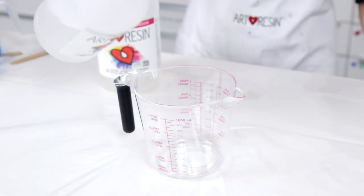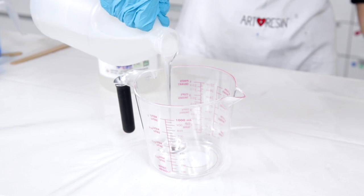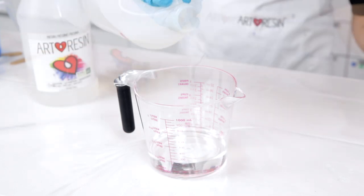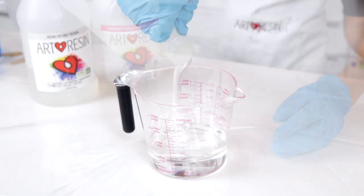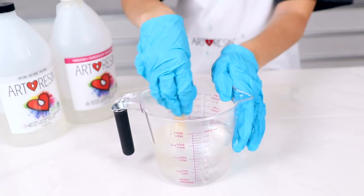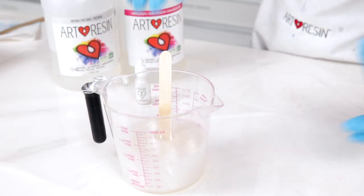Just like mold making material, art resin is a simple one-to-one ratio. Measure out equal parts of resin and hardener and mix thoroughly for three minutes. Once mixed you'll have approximately 45 minutes of working time with the resin.